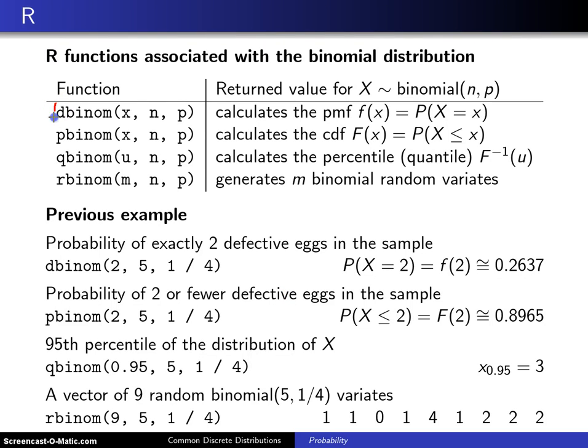The key thing are these first letters: d, p, q, and r. And then you put the name of the distribution, binom, short for binomial. D will give you the probability mass function. So whatever x value goes in here with parameters n and p, which are the parameters of the binomial, this will give you the probability mass function.